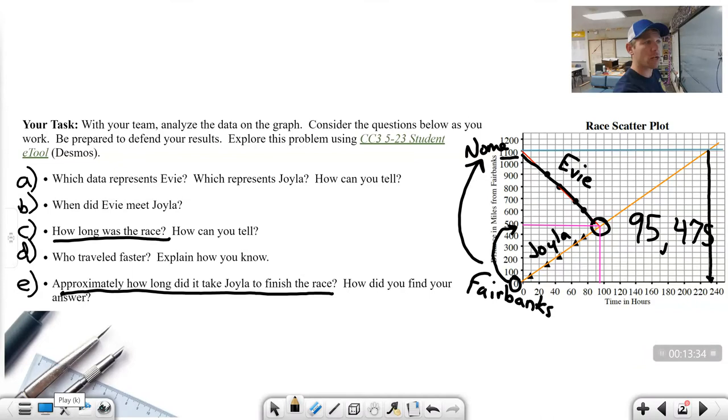Approximately how long did it take Joila to finish the race? Let's get another line on here because I know that the finish line is Nome. If Nome is the finish line, then how long did it take this orange line to cross the finish line? Nome doesn't change distance based on time. Time is traveling in this direction. So as time is increasing, the two of them met here in Nome and then they both went to the finish line. It took her about 230 hours. It took Joila approximately 230 hours to cross the finish line.